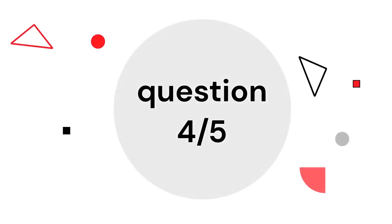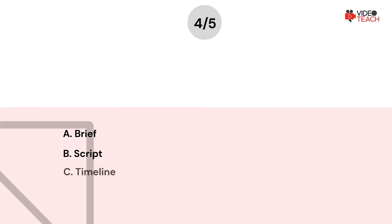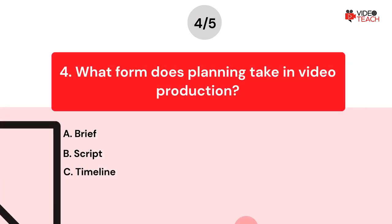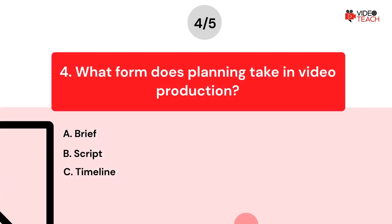Question number four. What form does planning take in video production? Option A: Brief. Option B: Script. Option C: Timeline.